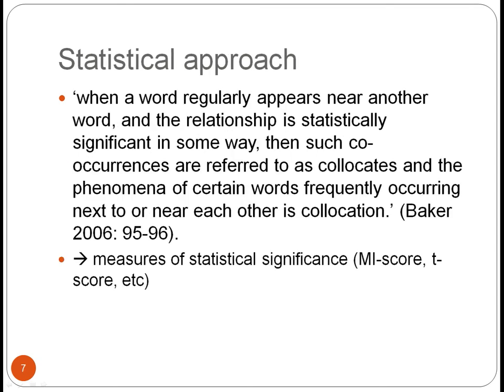Most commonly, collocation is defined in terms of probability and statistics. Baker talks about collocation as follows: when a word regularly appears near another word and the relationship is statistically significant in some way, then such co-occurrences are referred to as collocates, and the phenomenon of certain words frequently occurring next to or near each other is collocation.